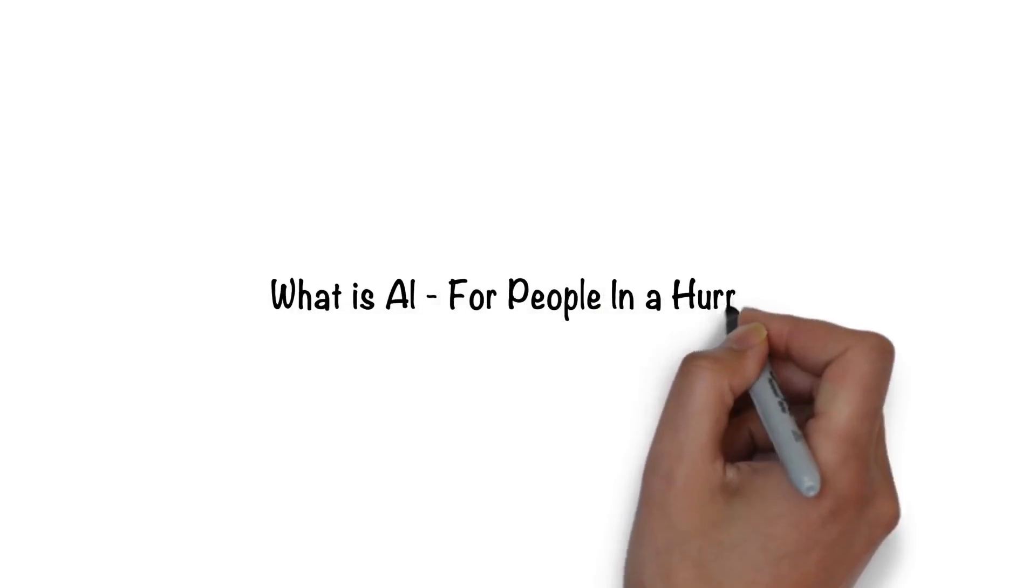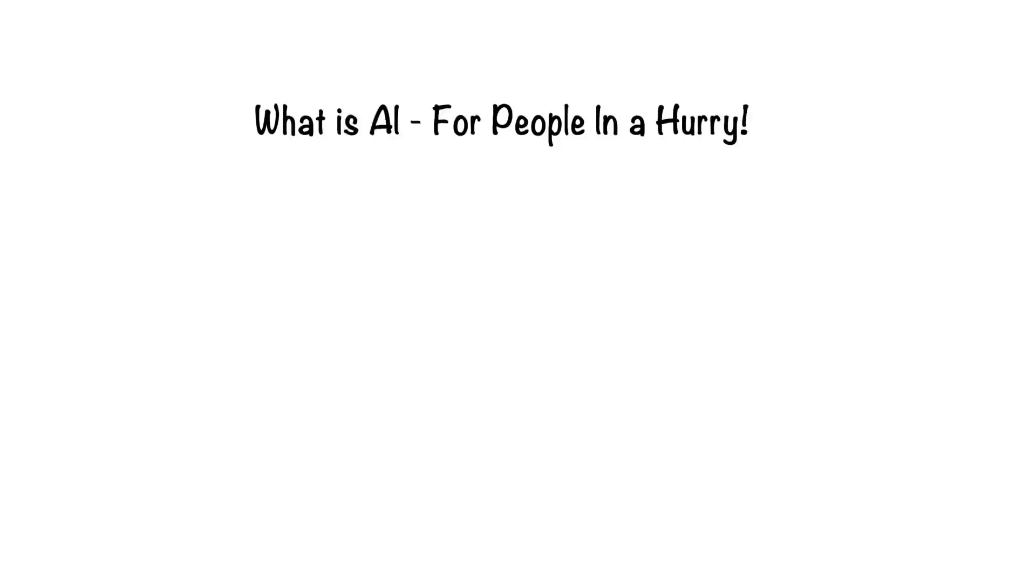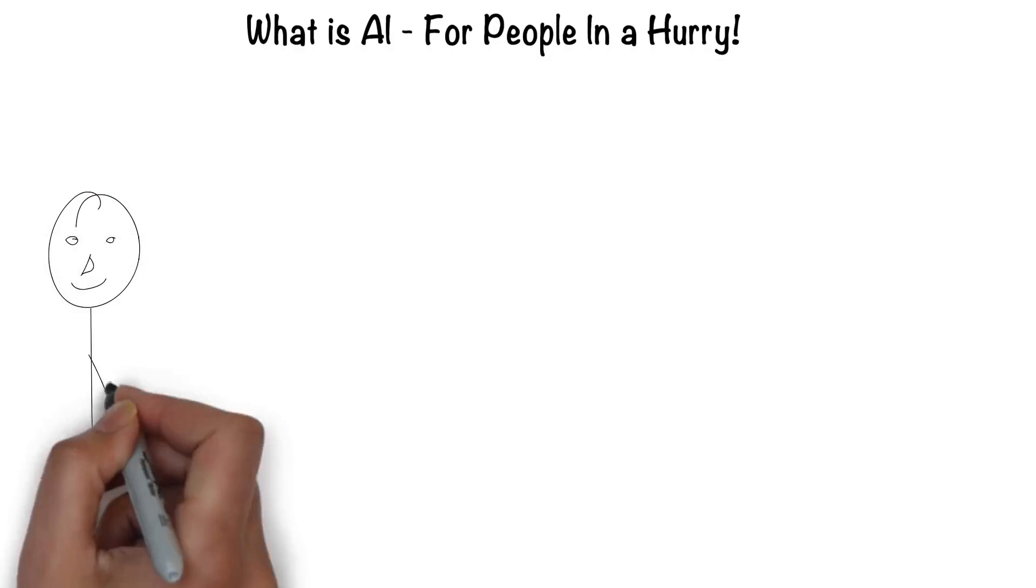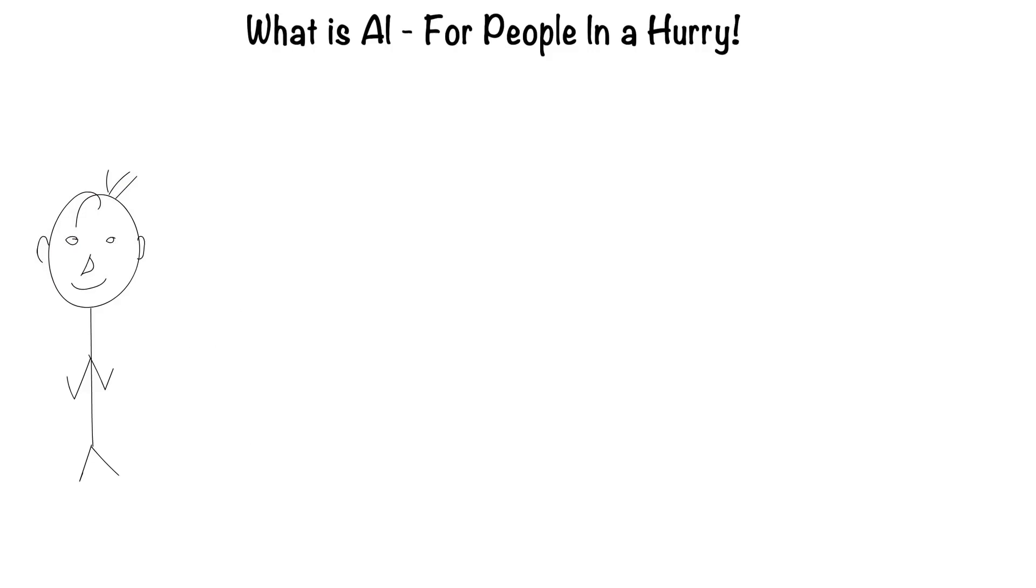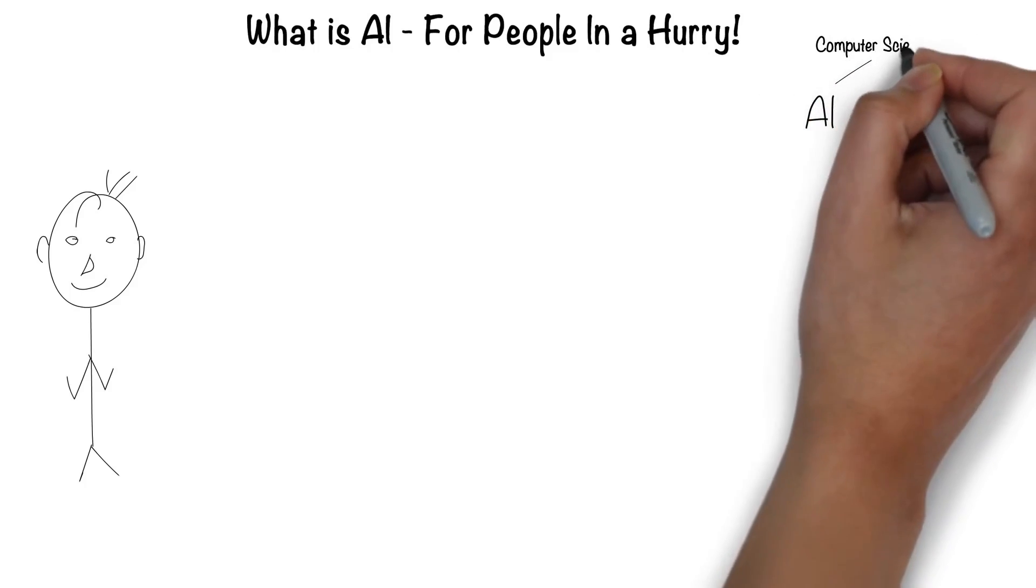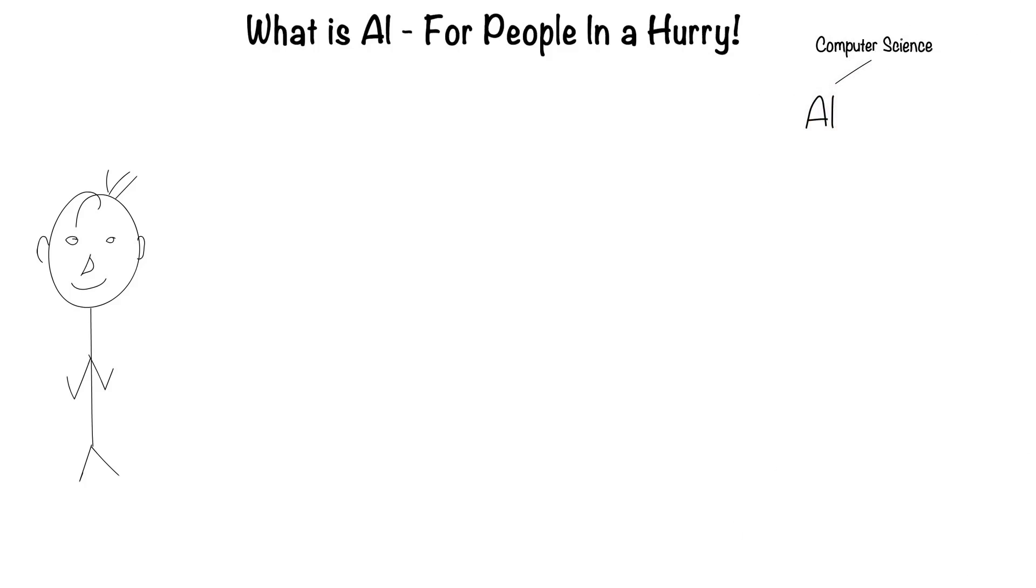Artificial intelligence for people in a hurry. The easiest way to think about artificial intelligence is in the context of a human. After all, humans are the most intelligent creatures we know of. AI is a broad branch of computer science. The goal of AI is to create systems that can function intelligently and independently.